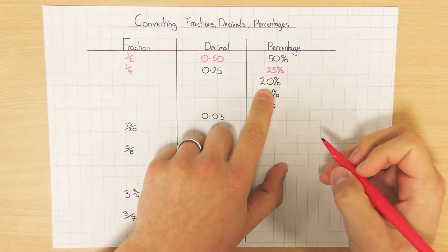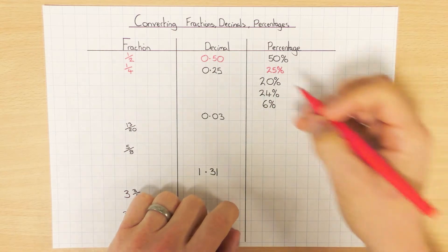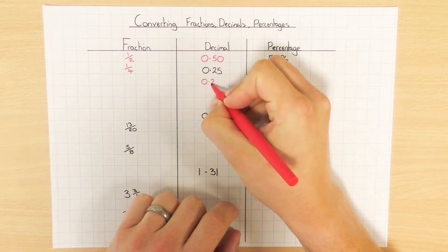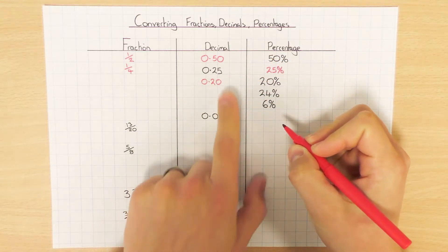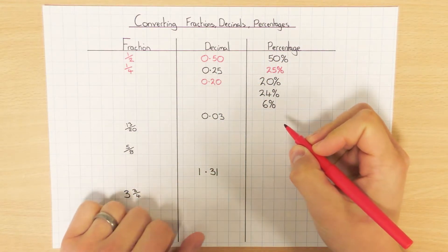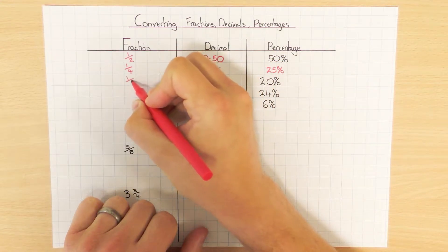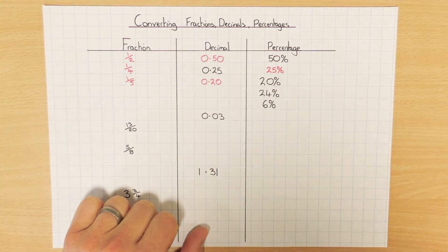20% is one that people tend not to remember, but it's always a good one to remember. That would be 0.2 or 0.20 — but again, 0.2 would be the better one there. And that's actually one-fifth. That does come up quite often, so it's definitely one to memorise for the future.